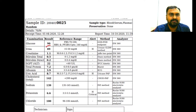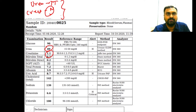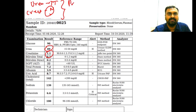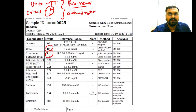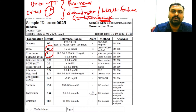Here urea is 89 but creatinine is normal — so urea is high but creatinine is normal. What could cause this? Urea can increase due to pre-renal, renal, or post-renal causes. Pre-renal causes include dehydration, heart failure, or GI hemorrhage. In GI hemorrhage, red blood cells break down, globin chains are separated, amino acid levels increase, and so urea levels rise.